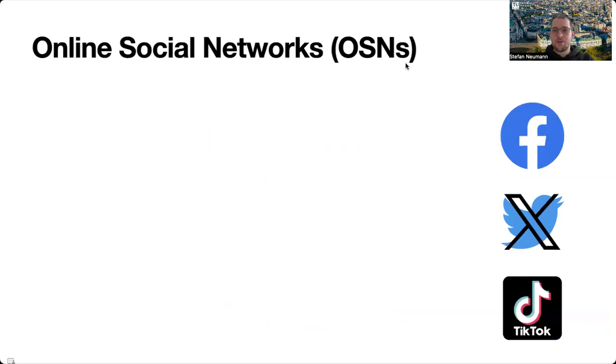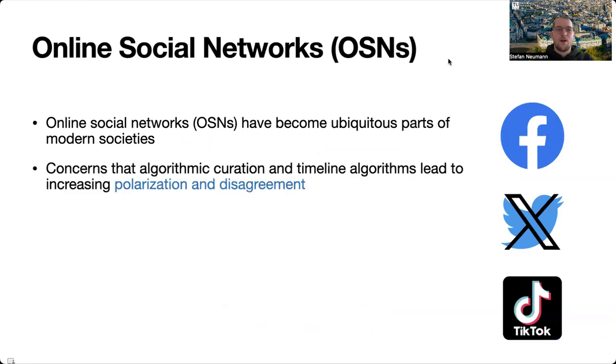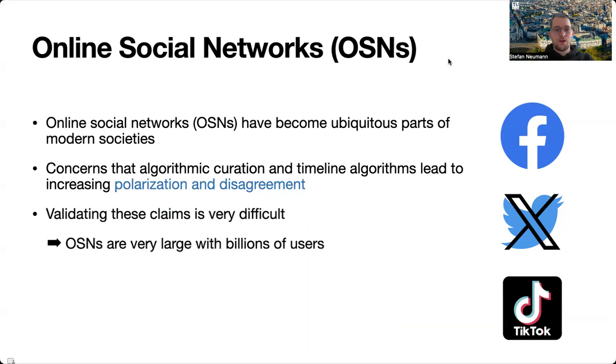To talk about this paper, let's briefly discuss online social networks, which during the last 20 years or so have become ubiquitous parts of modern societies. However, there have been concerns that algorithmic curation and timeline algorithms lead to increasing polarization and disagreement. To assess whether these concerns are valid is a very difficult question and there are many obstacles, two of them are as follows.